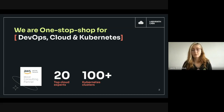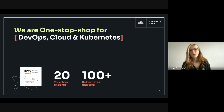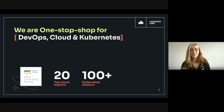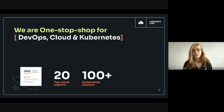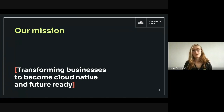We primarily focus on growing startups, migration to AWS for scale-up, and ISVs moving their solution to a SaaS offering — which we like to refer to as SaaSification. Martin will explain what that means in more depth. For SaaS and software builders already on AWS, we also offer infrastructure modernization and optimization in terms of security, performance, and costs. Our mission is transforming businesses to become cloud-native and future-ready.